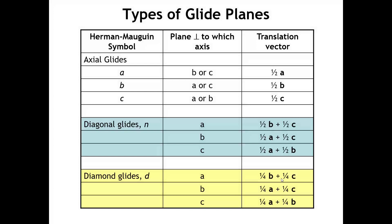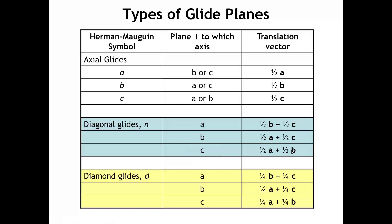In this table we summarize the different kinds of glide planes seen in crystals and the translation vector that goes with each. For the diagonal glides, the details of the translation vector depend on the orientation of the glide plane — for example, if perpendicular to the C axis, the translation is one half A plus one half B. We'll also encounter in a relatively small number of face-centered space groups something called a diamond glide, which has translations that are one quarter of the lattice vectors, denoted with the symbol D.